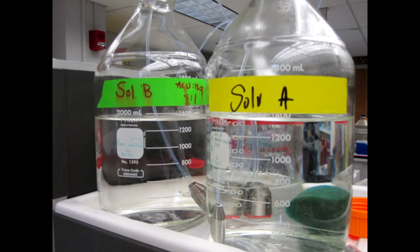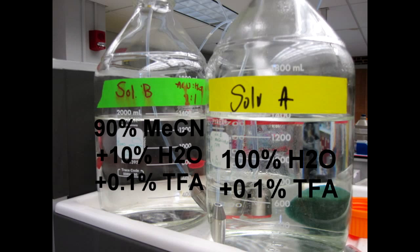Our lab labels these solvents as solvent A and solvent B. A is 100% water and is used to equilibrate the column. Solvent B is added at an increasing rate, which can be modified specifically for each sample. In most cases, we use 90% to 10% ratio of acetonitrile to water for solvent B.